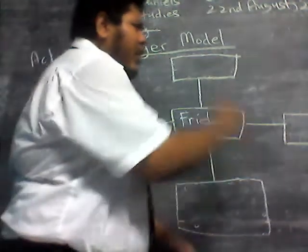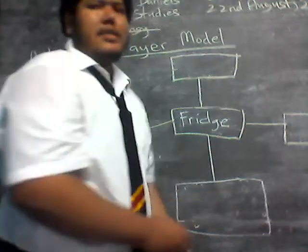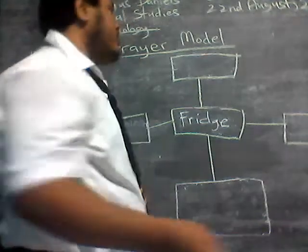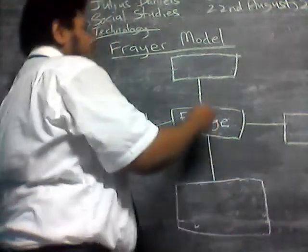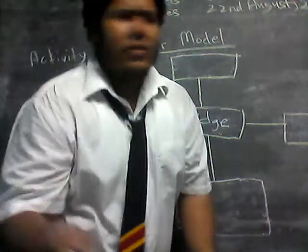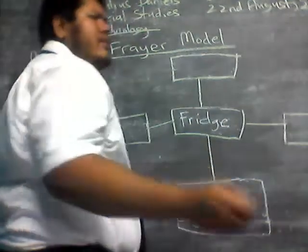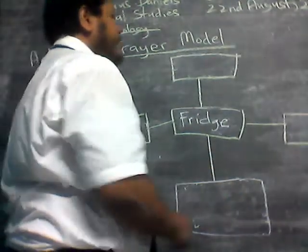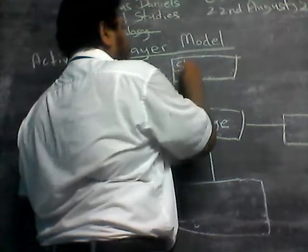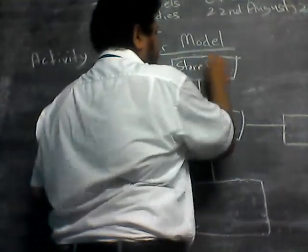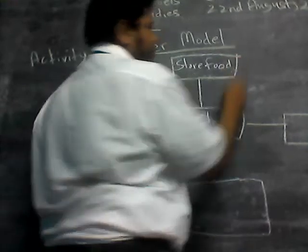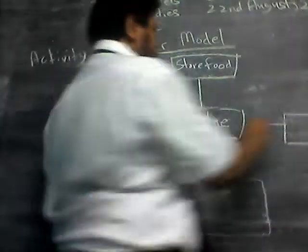So in the outer boxes you will put the uses of whatever device you choose. So what are the uses of the fridge? You can store food, make ice.